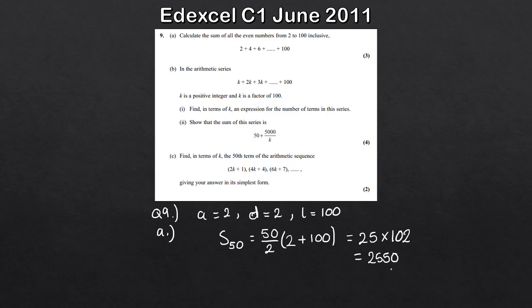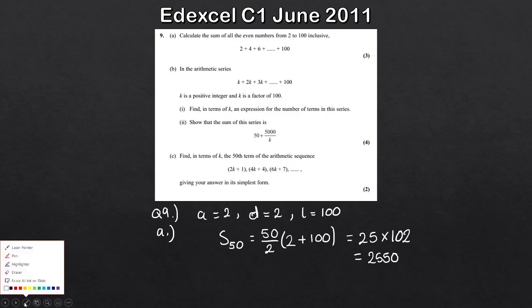Plugging that into your calculator, you should get 2,550. So that's the sum of all the even numbers from 2 to 100 inclusive - part A done. Let's move on to part B.